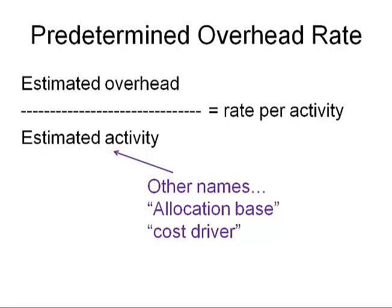The predetermined overhead rate is created by dividing estimated overhead by estimated activity. Some people call the estimated activity the allocation base or the cost driver, but it's the same thing. You pick a particular activity that you believe is most related to the overhead costs. If overhead costs are mostly labor related, then some labor measure would be the denominator — maybe direct labor hours or direct labor costs. If the overhead is mostly related to moving materials, maybe pounds of material moved. If it's mostly about forklift costs, then hours of forklift use. We usually pick some activity that's as related to overhead as you can find.